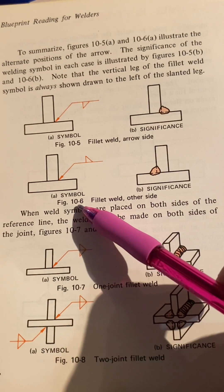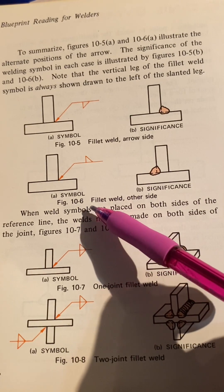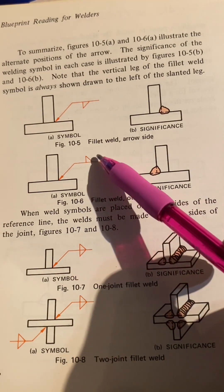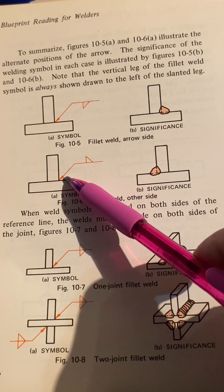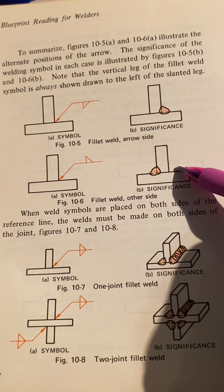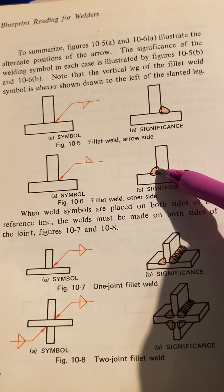Now, figure 10-6, fillet weld, other side. You see how now it's on the top, on the other side. And since the arrow's on this side, it'd be on this side, but it's on the other side, so that's why you weld on the other side.